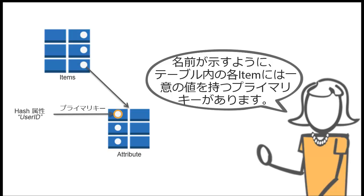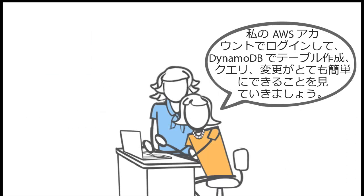As the name implies, each item in a table has a primary key with a unique value. Let me log into my AWS account and show you how easy it is to create, query, and modify a table in DynamoDB.